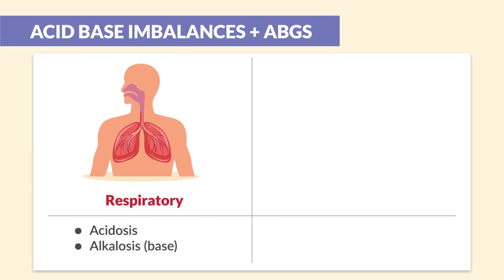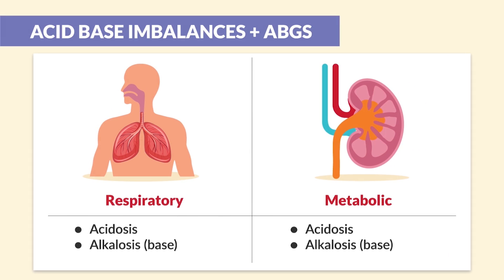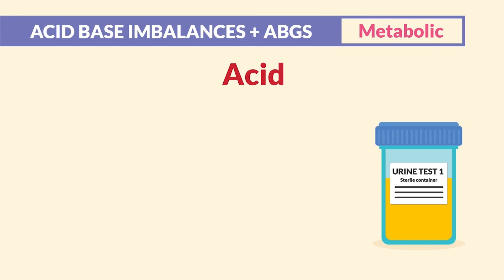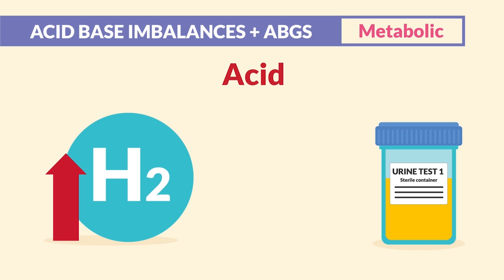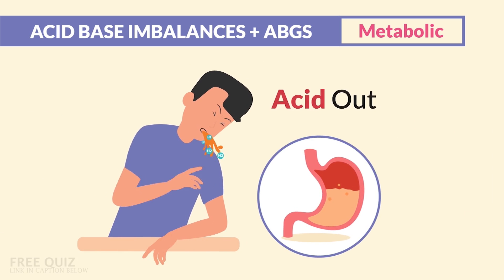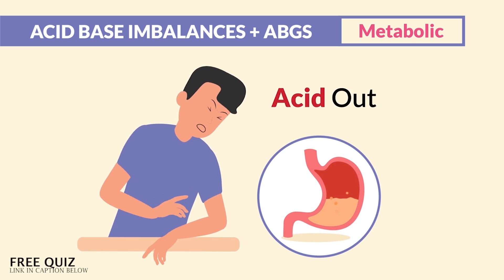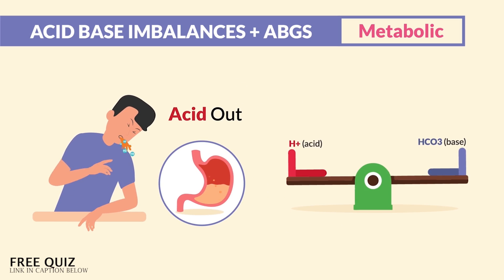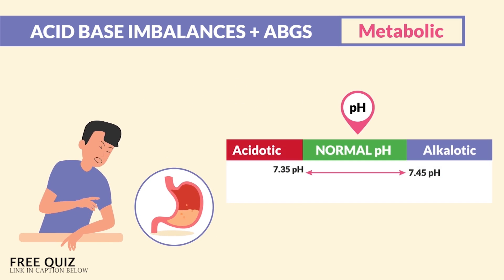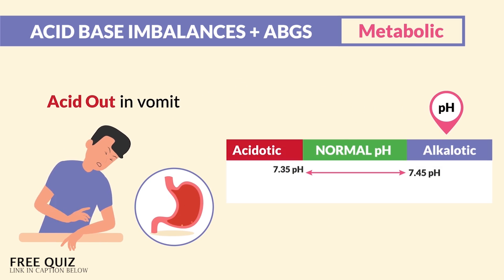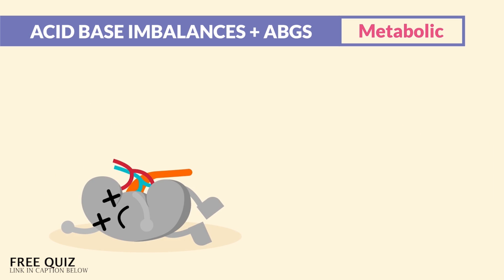Let's talk about respiratory versus metabolic acidosis or alkalosis. For metabolic, acid can be found in the urine from those high hydrogen ions and also in the stomach acids. So what happens if the patient vomits out all that stomach acid? Well, what are we left with — acid or base? We're left with base, we're left in alkalosis, since we threw up all that acid out of the body.